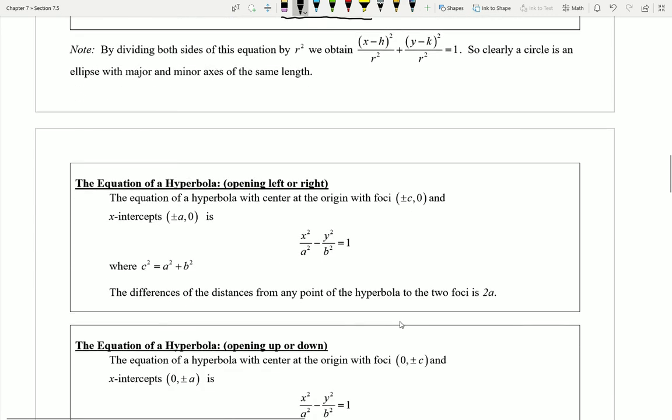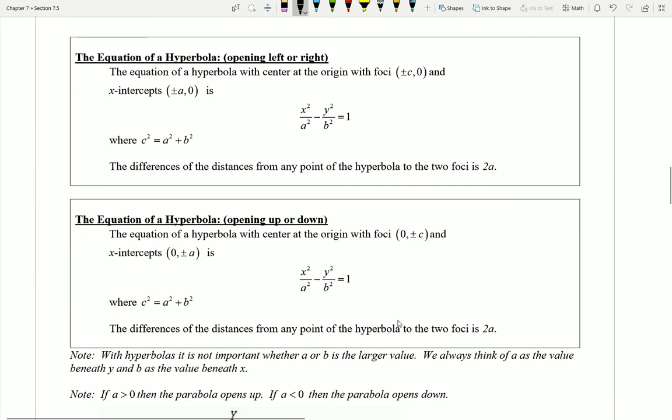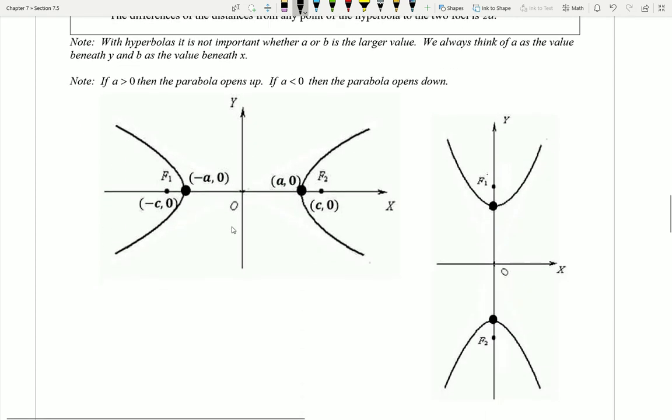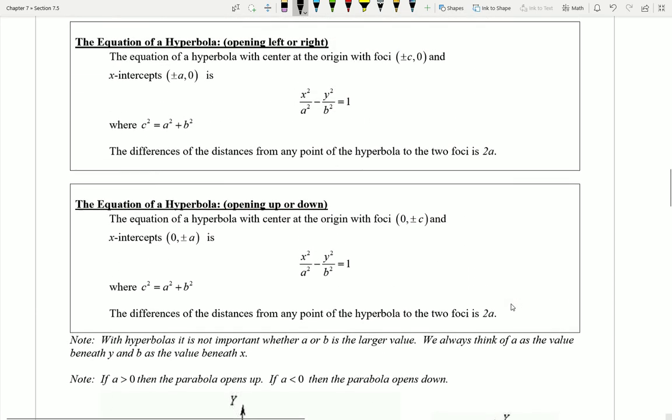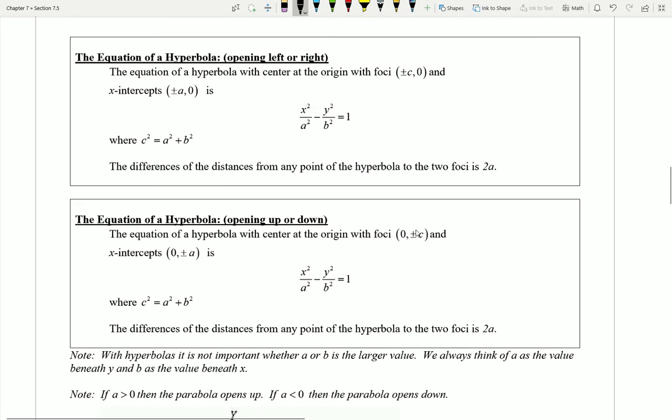The last conic section that we have is what we call a hyperbola. Hyperbolas are these double parabola-like shapes that either open left and right, or up and down. Now it's going to be the case that my hyperbolas are always going to be given by an equation that looks something like the following. Notice this is very similar to the equation of an ellipse, except that there is a subtraction.